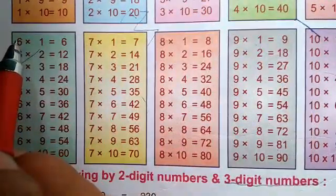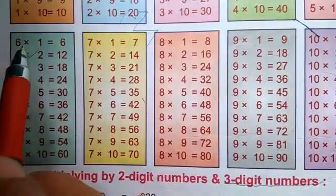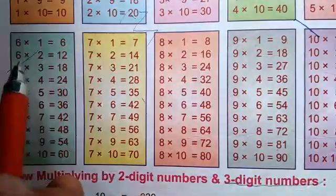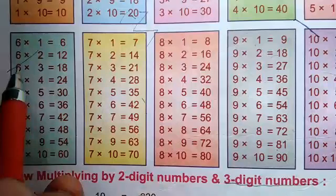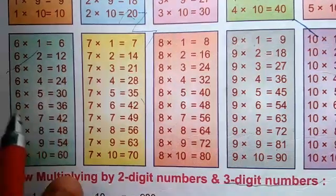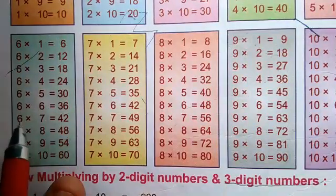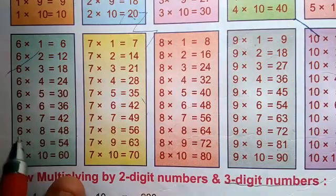Welcome to this channel. Table of 6: 6 times 1 is 6, 6 times 2 is 12, 6 times 3 is 18, 6 times 4 is 24, 6 times 5 is 30, 6 times 6 is 36, 6 times 7 is 42.